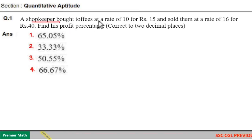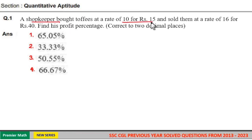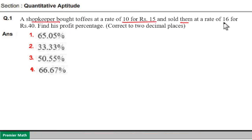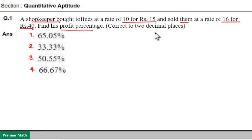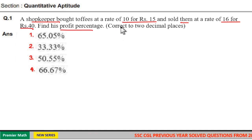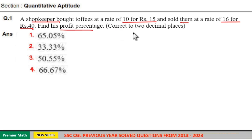A shopkeeper bought toffees at a rate of 10 for rupees 15 and sold them at a rate of 16 for rupees 14. Find his profit percentage. Here we don't know how much he bought or how much he sold, so take the cost price and sell price of 1 toffee.